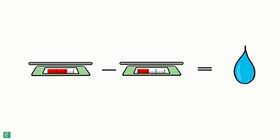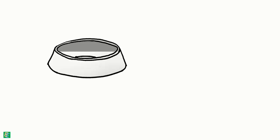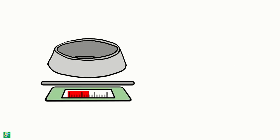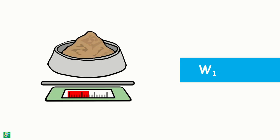What we actually do is we take a clean container and weigh it accurately. Let's say this weight as W1. Then we take some 30 to 40 grams of soil sample into the container, take its weight again, and let's say it W2.